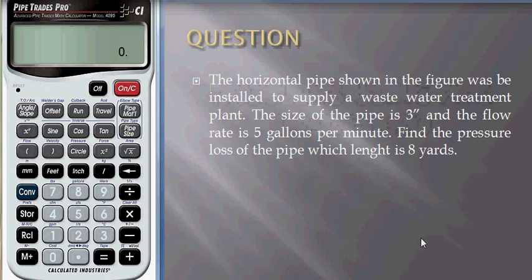The horizontal pipe shown in the figure was installed to supply a waste water treatment plant. The size of the pipe is 3 inches and the flow rate is 5 gallons per minute. Find the pressure loss of pipe where length is 8 yards.